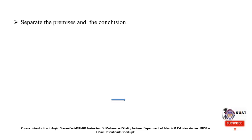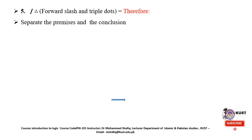Now we look at separating the premise from the conclusion. The terms used for the conclusion are 'therefore,' 'hence,' and 'consequently.' The symbol used for 'therefore' — the sign of the conclusion — is a forward slash followed by three dots. This separates premises from the conclusion. For example, 'If P then Q, P, therefore Q' can be expressed as P ⊃ Q, P, ∴ Q.